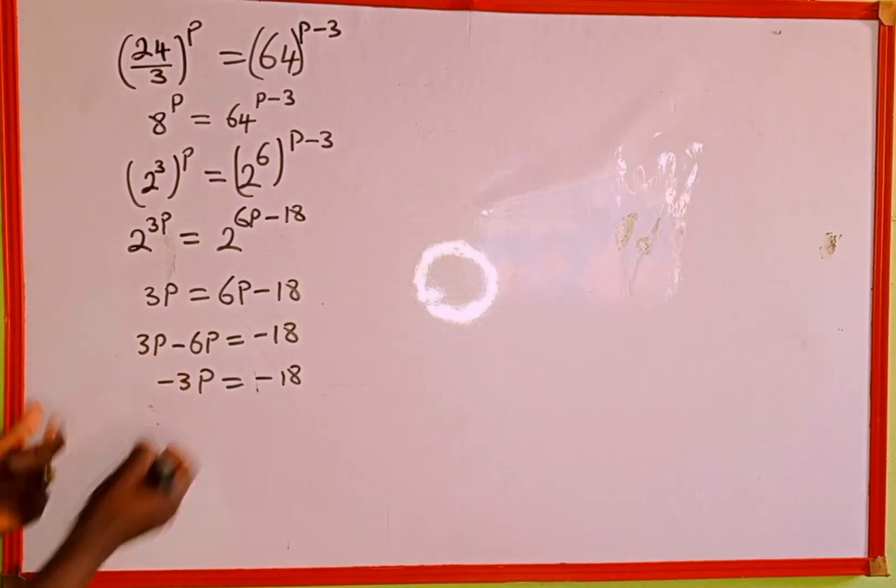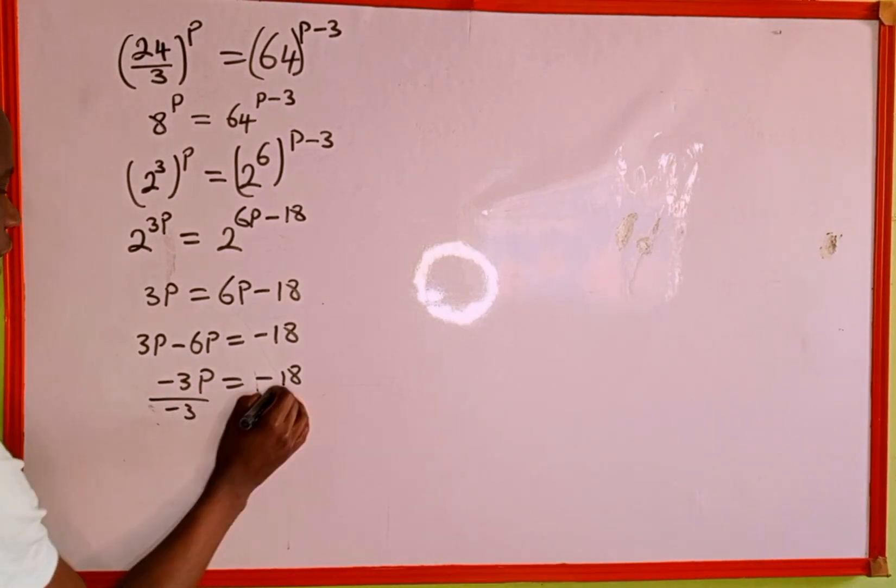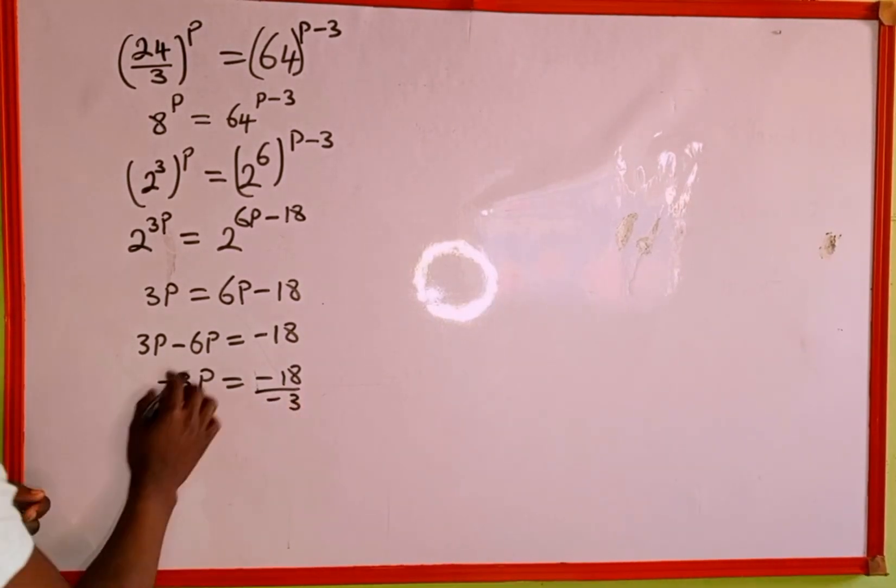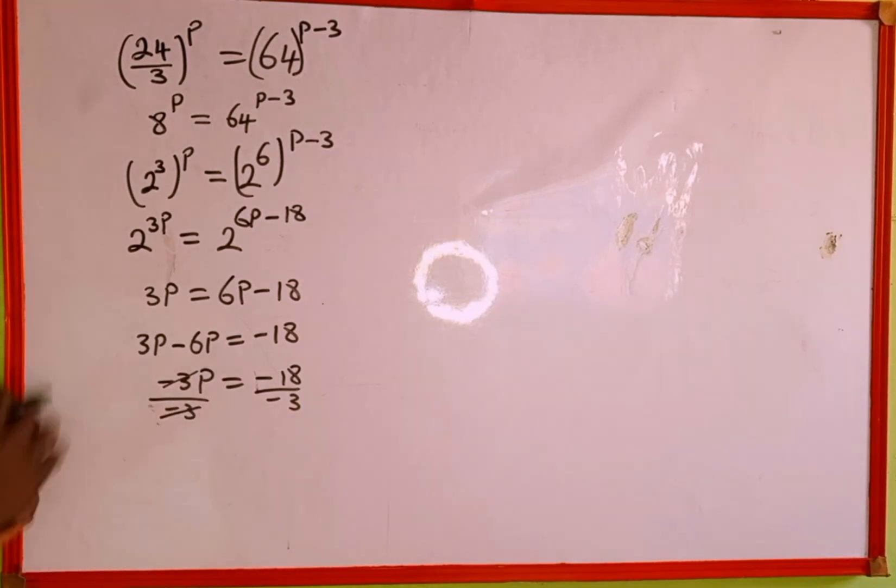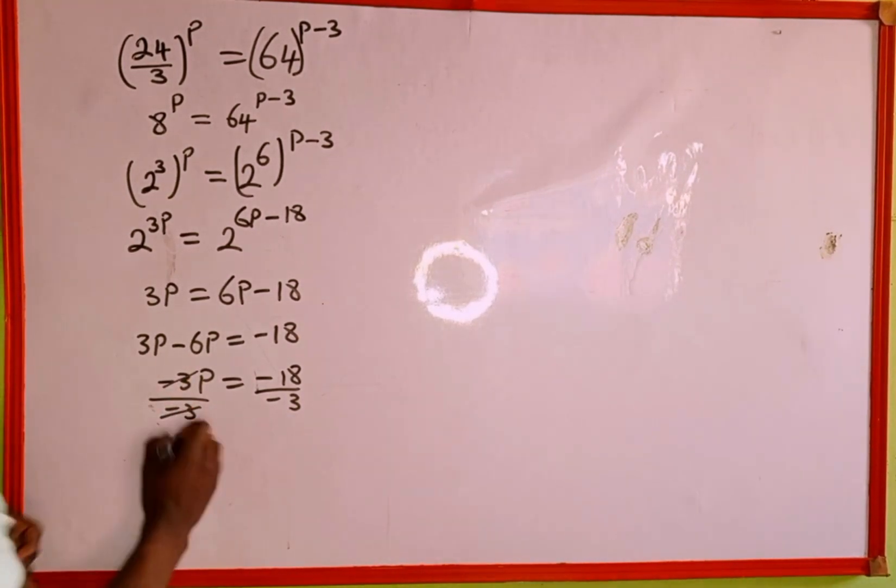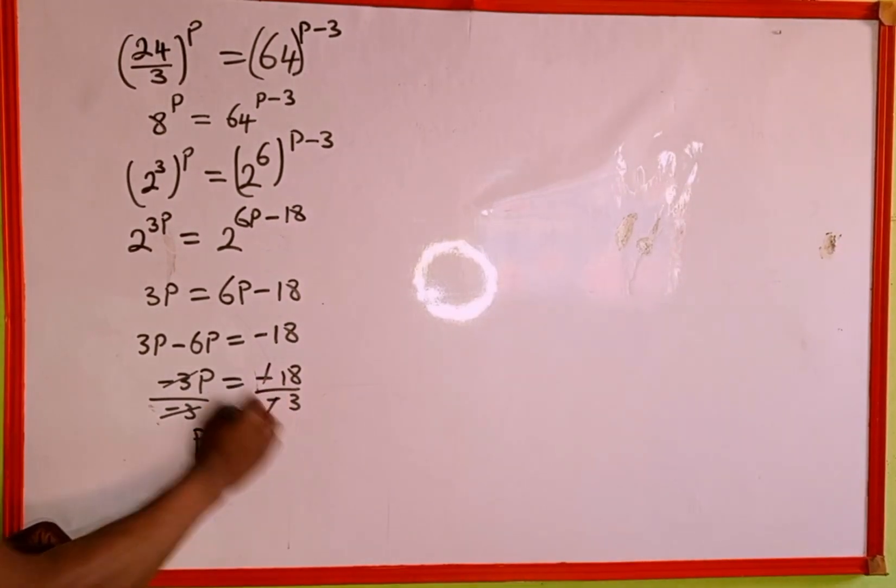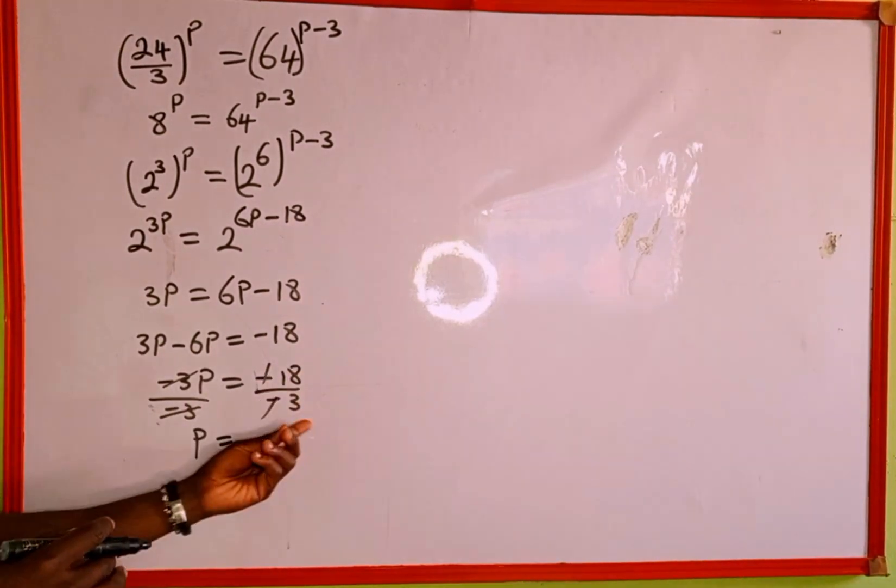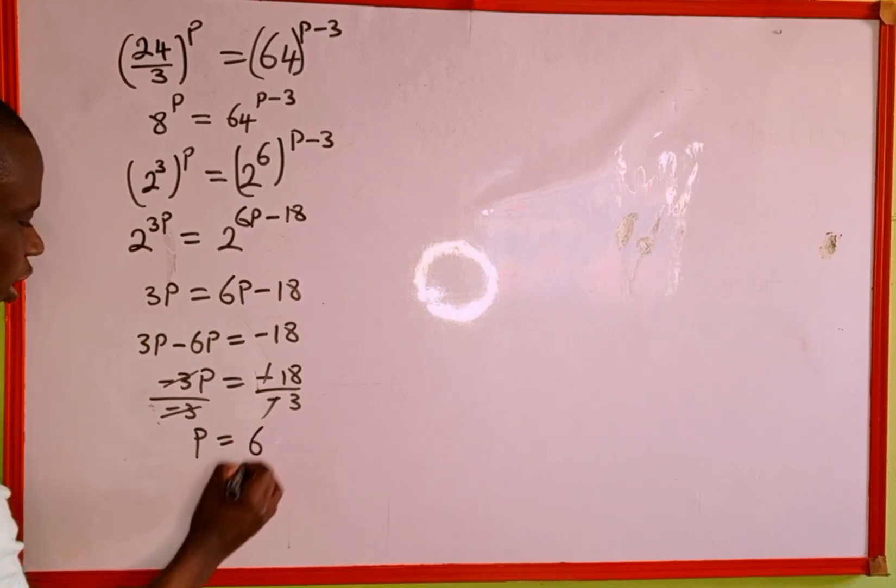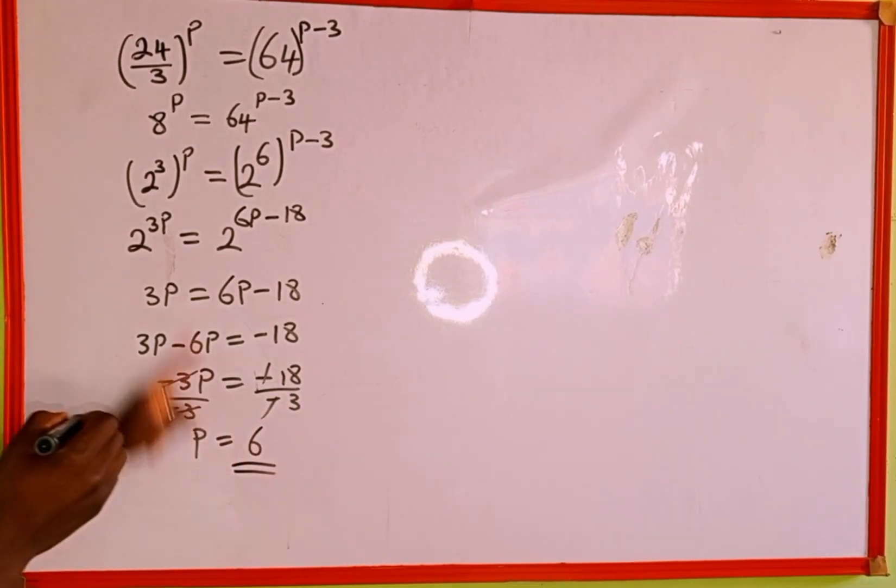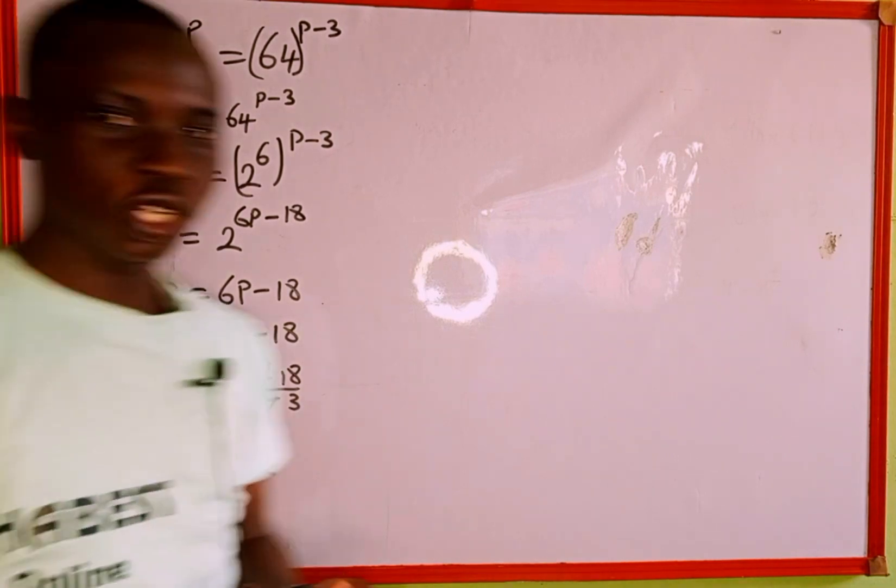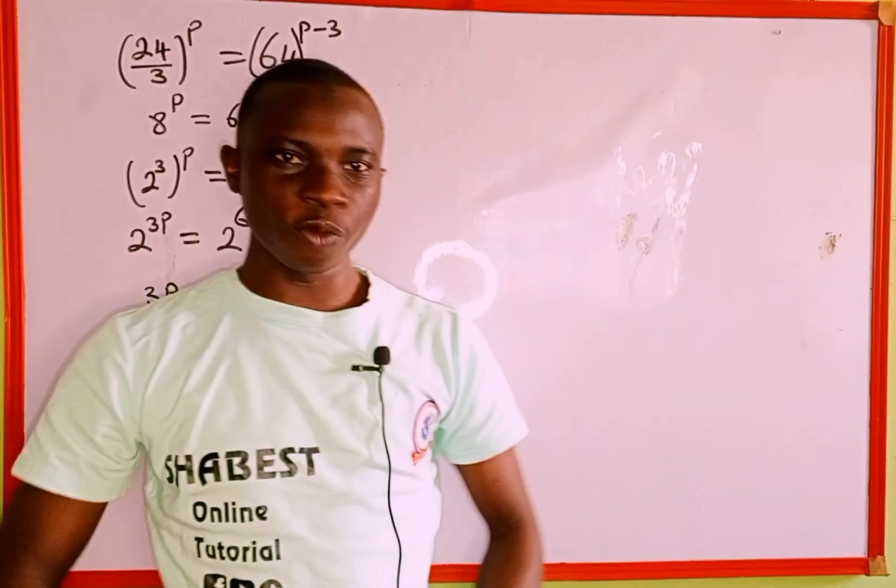Then we divide through by the coefficient of p, which is minus 3. The minus 3 cancels out on the left hand side, leaving us with p. On the right, negative cancels negative, and 18 divided by 3 equals 6. Therefore, 6 is the value of p that satisfies this exponential equation. Thank you for watching and please follow and subscribe for more.